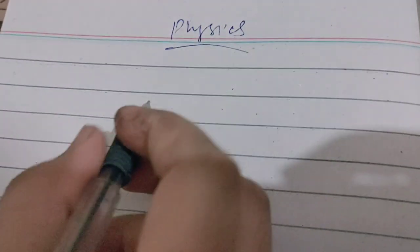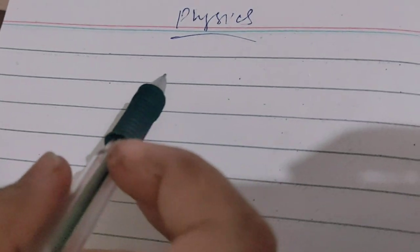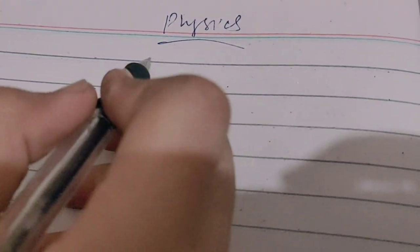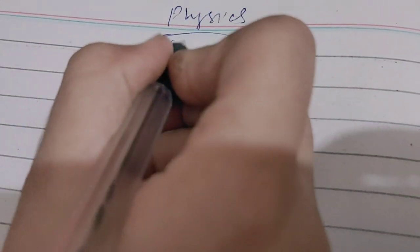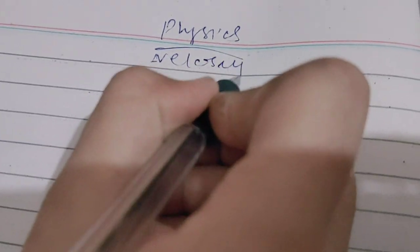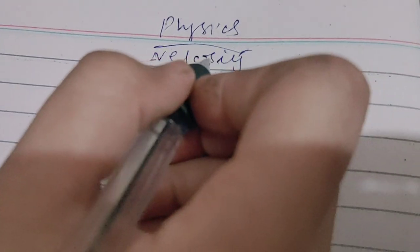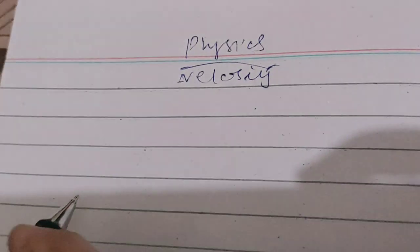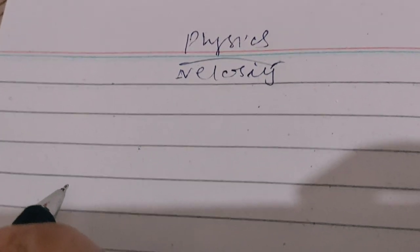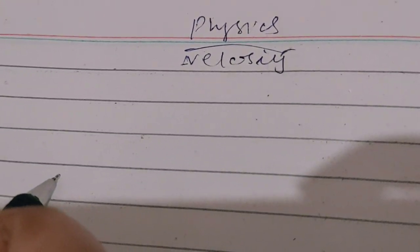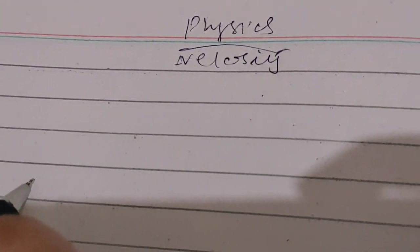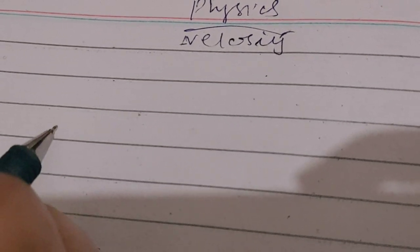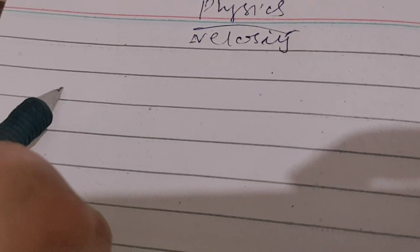Today I will discuss a numerical problem of 10th class on the topic of velocity. The problem is: a car is moving on a straight road at 5 meters per second, it is accelerated at 3 meters per second squared. What will be the velocity after 4 seconds?